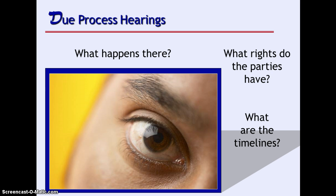There are two systems that states can choose: a one-tier system where a state-level agency is responsible for conducting the due process hearing, and an appeal from a due process hearing decision goes directly to the court — that is what we are in in Georgia. A two-tier due process system starts at the school district level, then moves to the state level, and then the court for appeals.